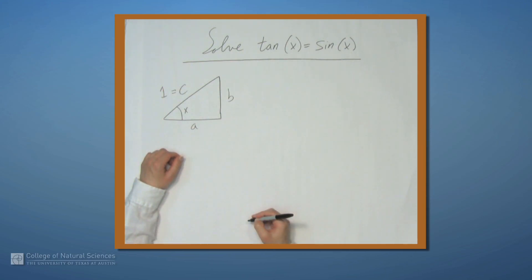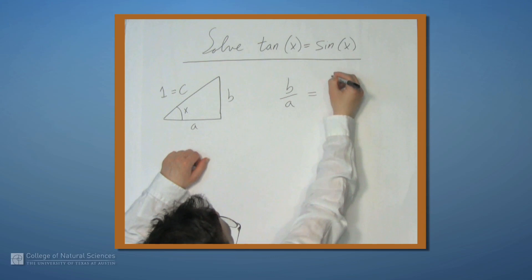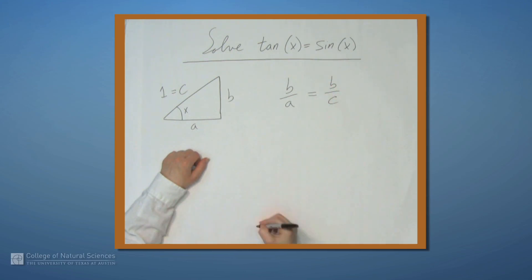So what does it mean to say that tangent of x equals sine of x? Well tangent is b over a, and sine is b over c. So this says that b over a equals b over c.